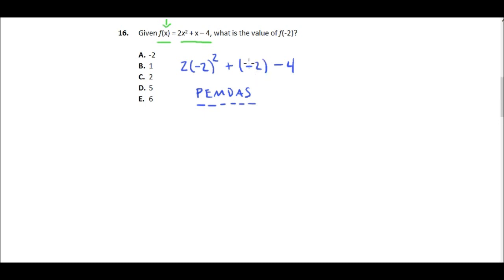But our parentheses just have a negative number in them. So we'll just leave that alone for now. We don't need to do anything with that yet. But this exponent, which is the next thing, we can do something with. So negative 2 squared is 4.